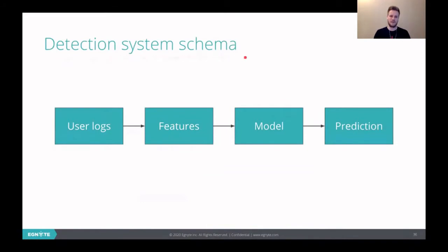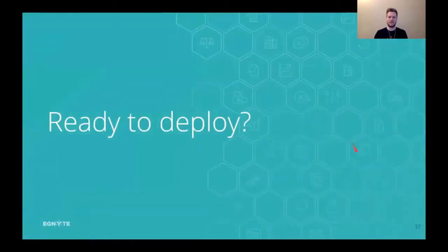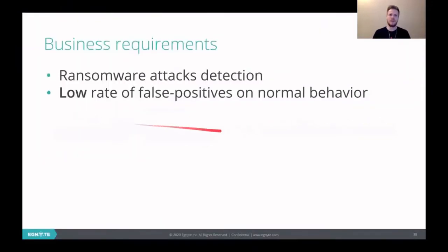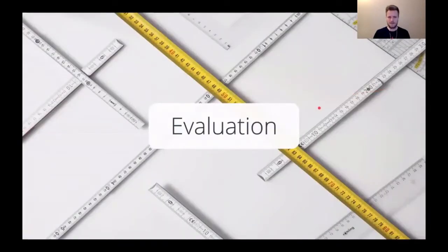So the schema for now looks like that. We take user logs, we calculate features on that, we go to the model, to our random forest model, and we have a prediction if there is an attack or not. So can we deploy it now? To answer this question, we need to get an answer if we meet those business requirements. So if we can detect ransomware attacks and if we provide a low rate of false positives. So let's evaluate the model.